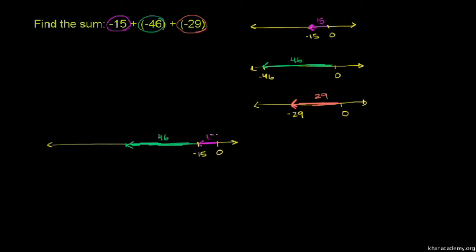And then finally we have this orange arrow, which has a length of 29, pointing 29 to the left. So when all is said and done, the total length we are to the left is 15 plus 46 plus 29, but it's going to be negative because all directions are to the left. Since all of these have the same sign, this is the same as the absolute value of negative 15, which is 15, plus the absolute value of negative 46, which is 46, plus the absolute value of negative 29, which is 29 — but then take the negative value of it.